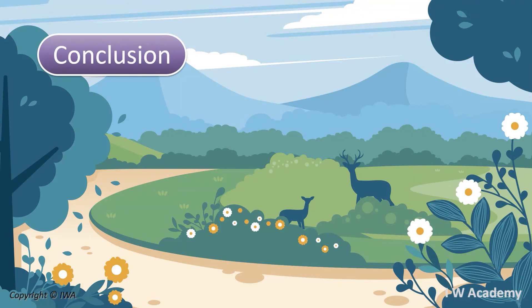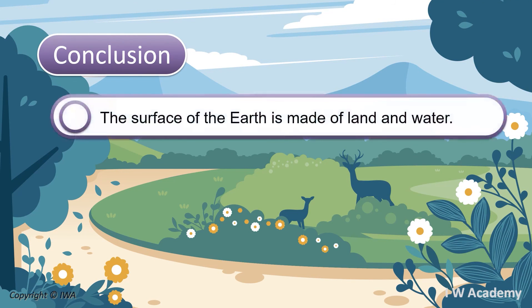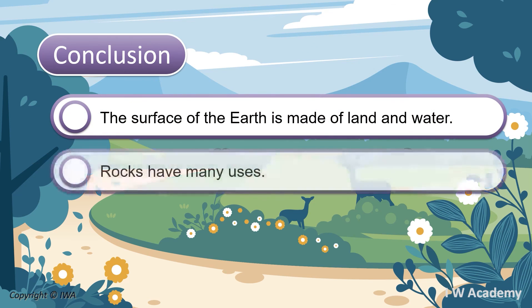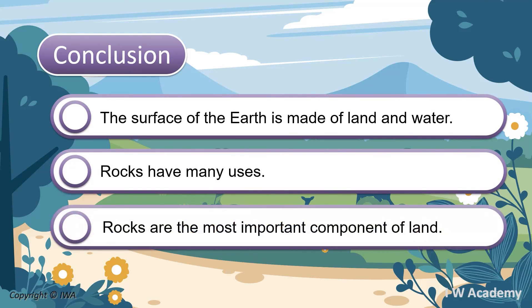In conclusion, we learned that the surface of the Earth is made of land and water, and that rocks have many uses. Rocks are the most important component of land.